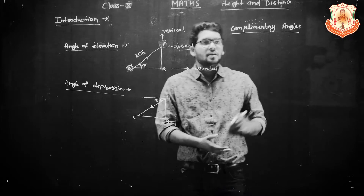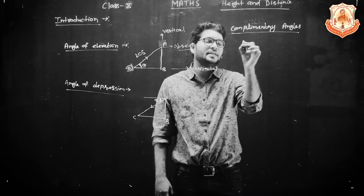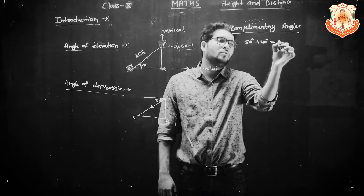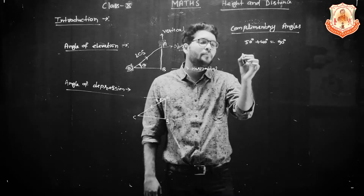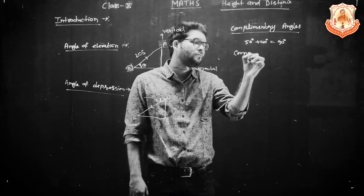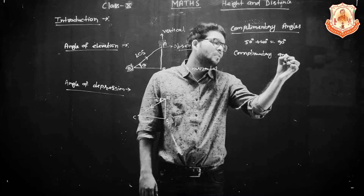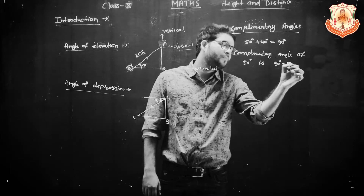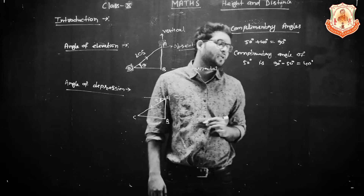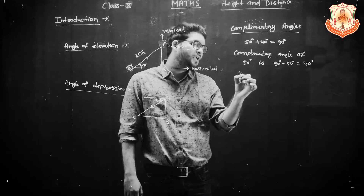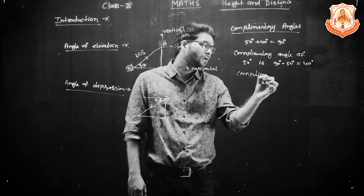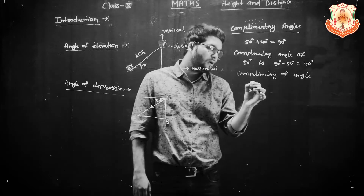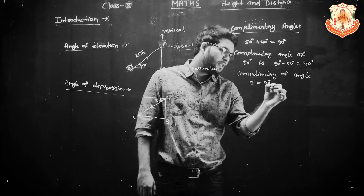And what are Complementary Angles? Complementary Angles are angles whose sum is 90 degrees. For example, 50 degrees plus 40 degrees equals 90 degrees. That means the Complementary Angle of 50 degrees is 90 minus 50 equal to 40 degrees. The Complementary of any angle Theta is 90 minus Theta.